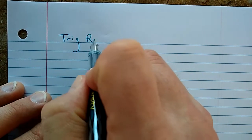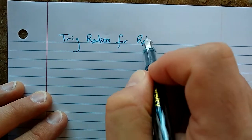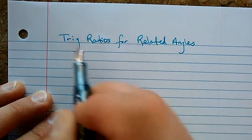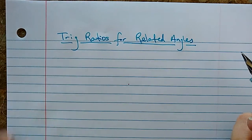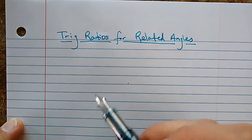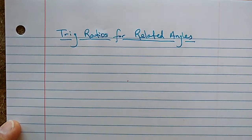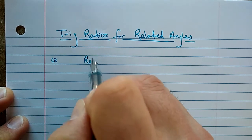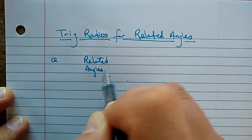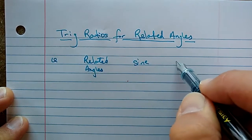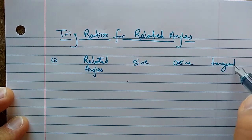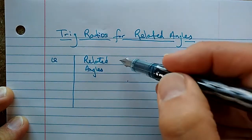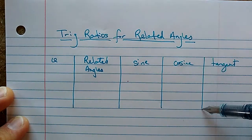Why does all this matter? The neat thing is that the trig ratios for related angles are really similar to each other. You may have noticed some symmetry in that X shape we just drew. Let's look at an example of a particular angle and all of its related angles and calculate the sine, cosine, and tangent using a calculator for each one. We'll make a little chart with columns for quadrant, related angles, sine, cosine, and tangent. We'll need four rows since there are four related angles.